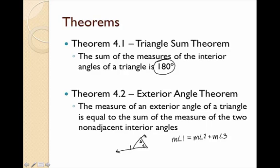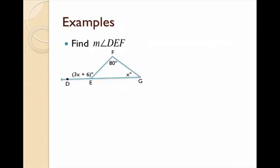For example, if we extend another side and label angle 4 as the new exterior angle and angle 5 as the new interior angle, then the measure of angle 4 equals the measure of angle 2 plus the measure of angle 5 — the two non-adjacent interior angles. Let's put the Exterior Angle Theorem to use and apply our knowledge.